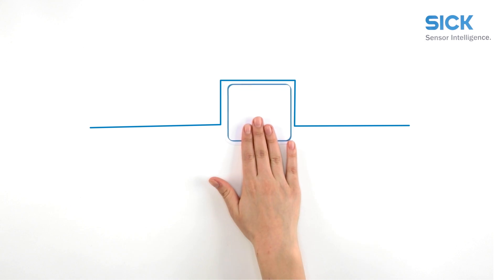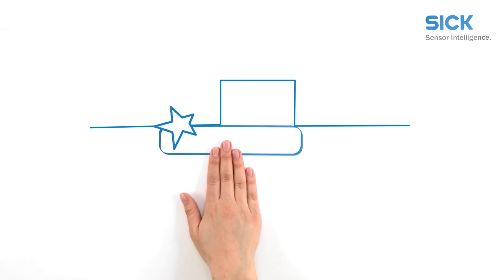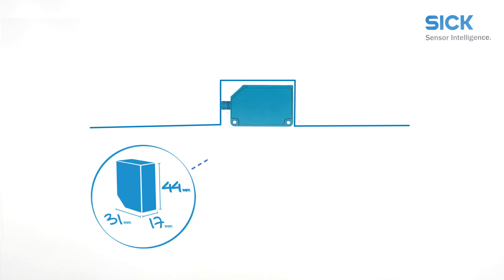Where other sensors are too long or too wide because of their design, the OD Mini fits in any application due to its small, compact housing.